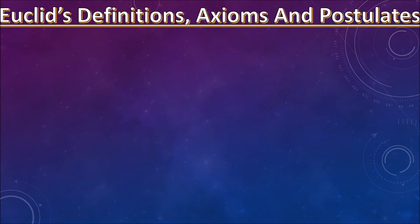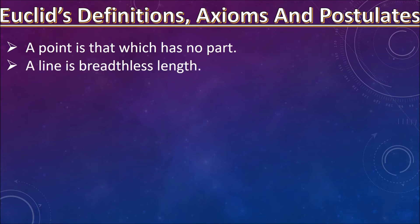Euclid summarized the work of geometry as definitions. He listed 23 definitions in Book One of Elements. A few of them are: a point is that which has no part; a line is a breadthless length; the ends of a line are points;